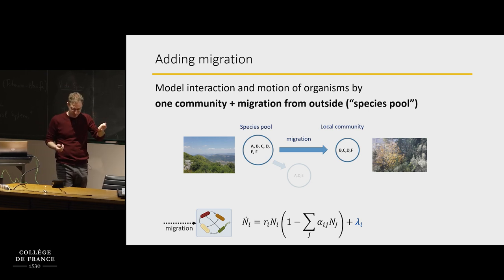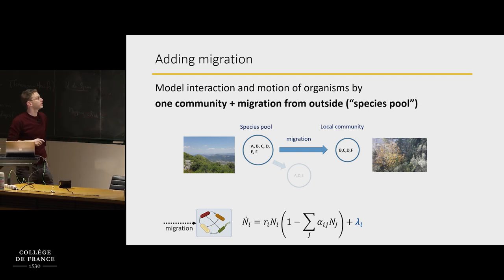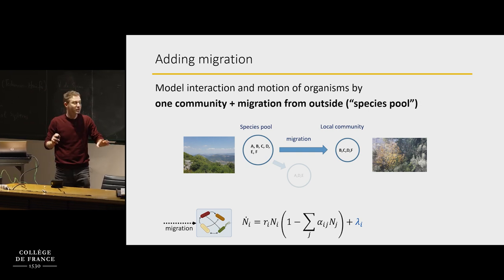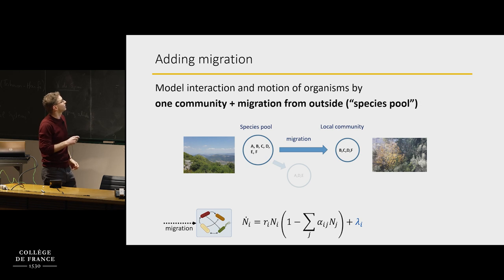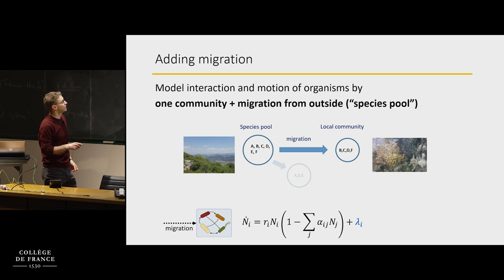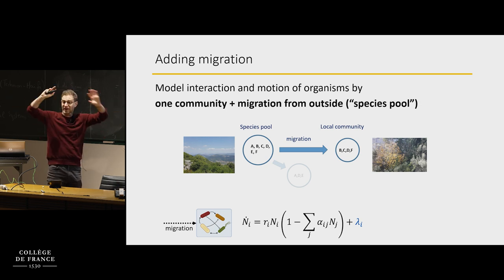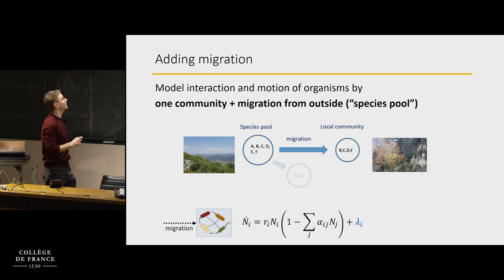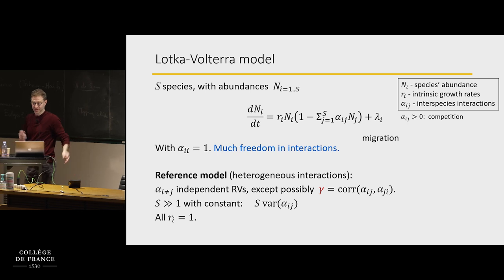The last thing we want to add to these equations is space. Space is very important. For today I'll do it in the most primitive way possible: we focus on one location in space and just imagine that all the rest of the habitats around contribute a migration term. So seeds of trees enter from outside, some unspecified space around us — that's an additional migration term in the equations.